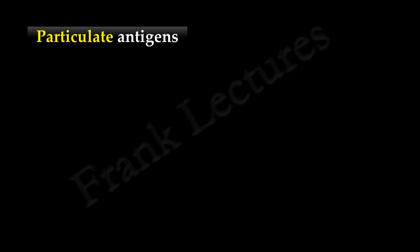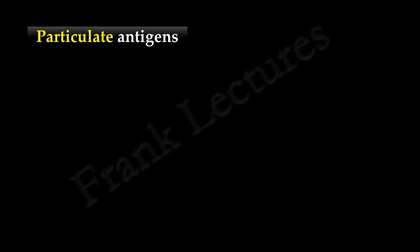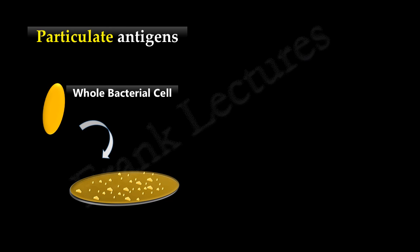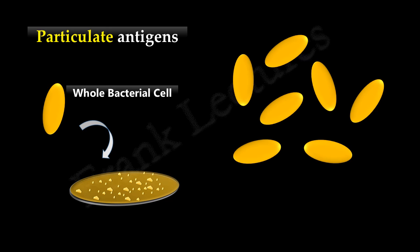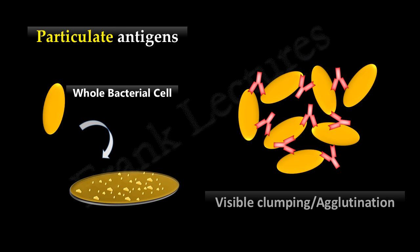Now there are particulate antigens too. Particulate antigens are particles such as cells that carry antigenic molecules on their surface — for example, whole bacterial cells, fungal cells, and mammalian cells. When specific antibodies to these particulate antigens are added, cross-linking occurs. This cross-linking results in clumping or agglutination of the particulate antigens, which is visible enough to be seen by the unaided eye.